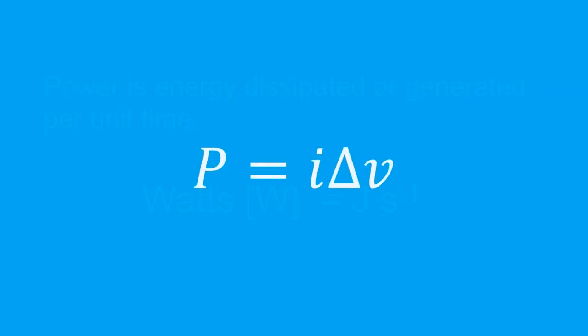In circuits, the power P is given by the current times the voltage across the device, that is P equals I delta V.